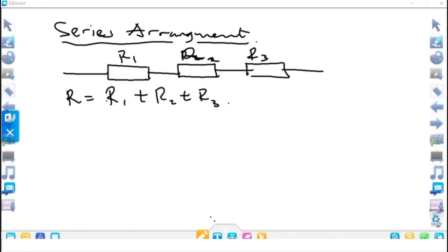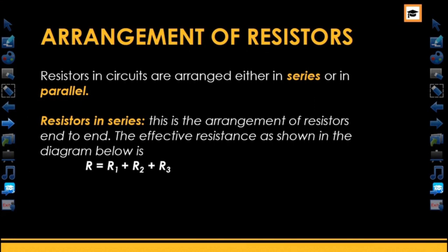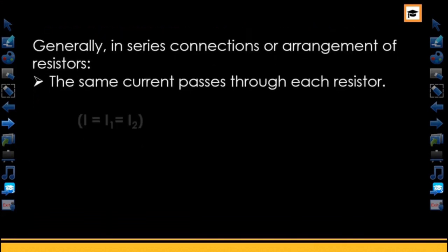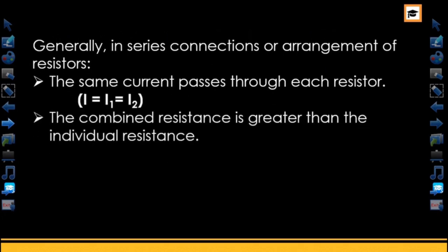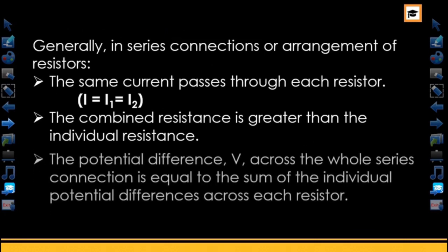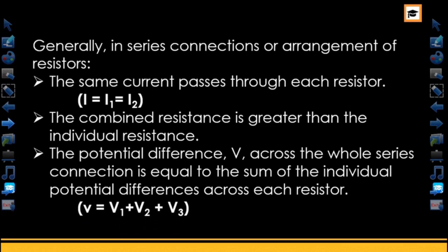In series arrangements, the following should be noted: the same current passes through each resistor. Also, the combined resistance is greater than any individual resistance. Lastly, the potential difference V across the whole series connection is equal to the sum of individual potential differences — that is, V equals V1 plus V2 plus V3.